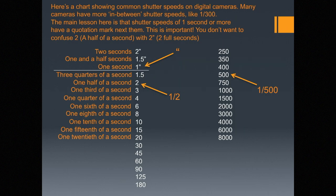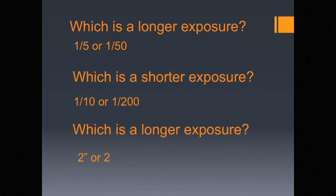Here's a chart showing the common shutter speeds on digital cameras. Many cameras have more in-between shutter speeds like a 300th or a 375th of a second. The main lesson is that shutter speeds of one second or more have a quotation mark next to them. You don't want to confuse '2' which is half a second, with '2"' which is two full seconds. Which is a longer exposure — a fifth of a second or a 50th of a second? Which is shorter — a tenth or a two-hundredth? The bottom one is important: two-seconds versus just half a second.